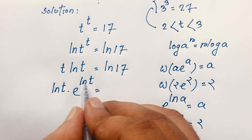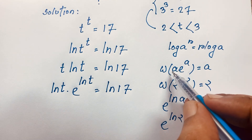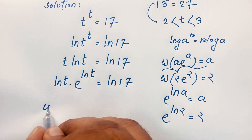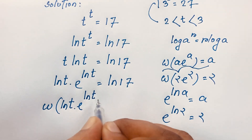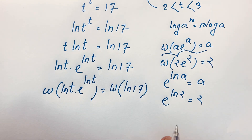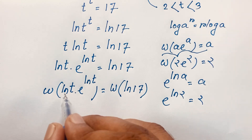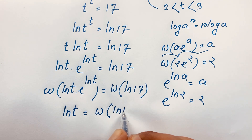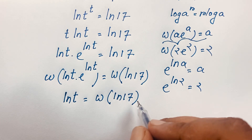Now the equation becomes ln(t)·e^(ln t) = ln(17). This matches the form a·e^a, so I apply the Lambert W function to both sides: W(ln(t)·e^(ln t)) = W(ln 17). Since W(a·e^a) = a, the left side gives ln(t) = W(ln 17).